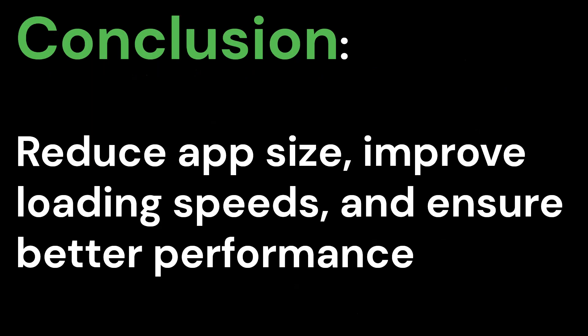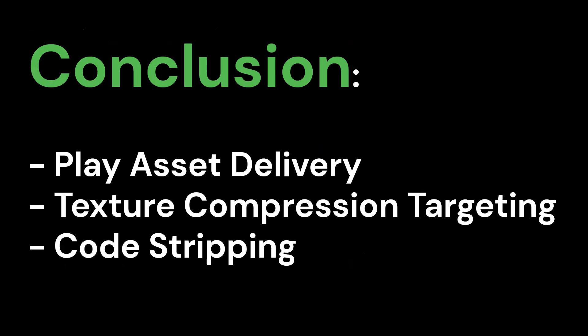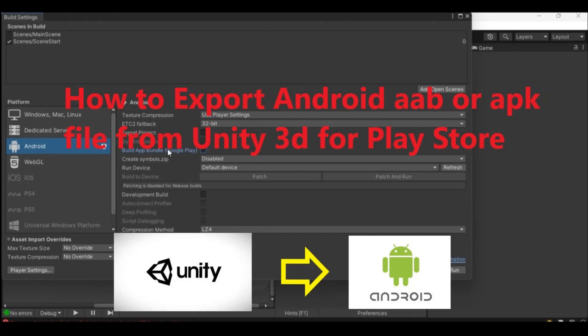Conclusion — by following these techniques, you can reduce app size, improve loading speeds, and ensure better performance across a wide range of Android devices. With Play Asset Delivery, texture compression targeting, and code stripping, Unity developers can fully leverage App Bundles for optimized game distribution on Google Play. If you need the steps to export from a Unity 3D project as an Android App Bundle (AAB) or APK for the Play Store, please refer to my tutorial with the link given in the description below.